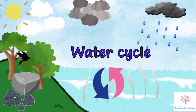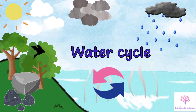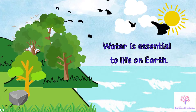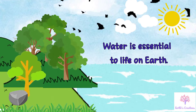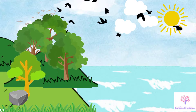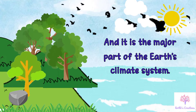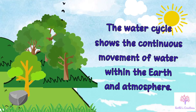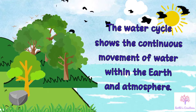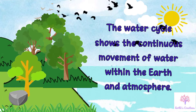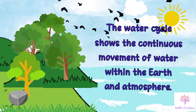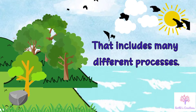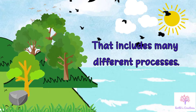In this video we are going to see about the water cycle. Water is essential to life on earth and it is the major part of earth's climate system. The water cycle shows the continuous movement of water within the earth and atmosphere that includes many different processes.